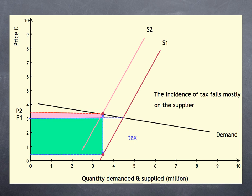So, the supplier has to absorb most of the tax. And the incidence of tax falls mostly on the supplier.